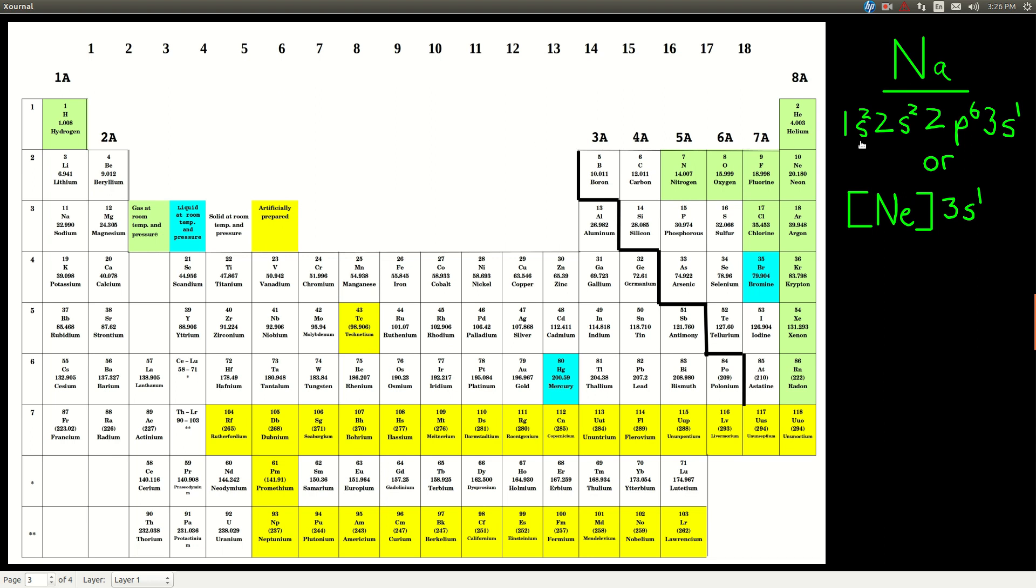so 1S2, because we're past this there, then we're past the 2S block, so 2S2, and then we're past the 2P block, so 2P6, and then we're in the first column of the 3S block, so we say 3S1,